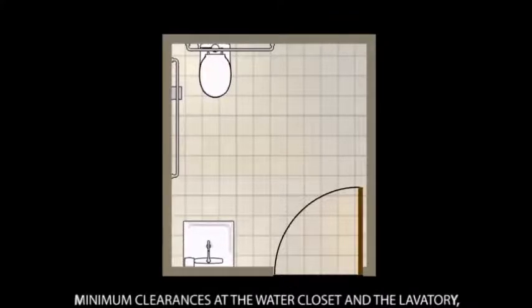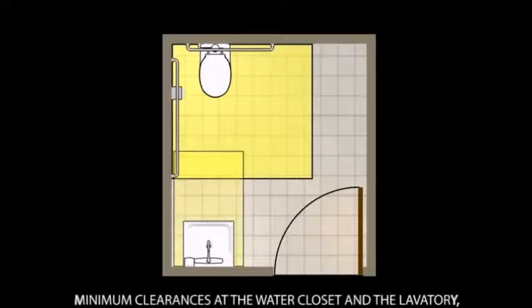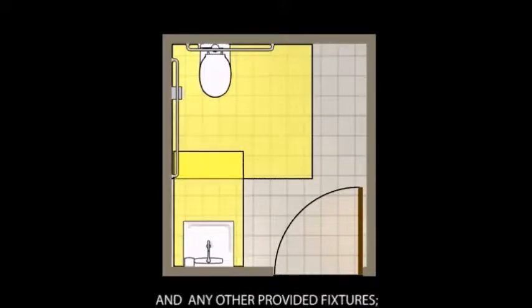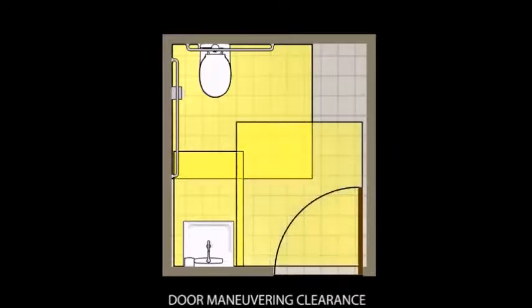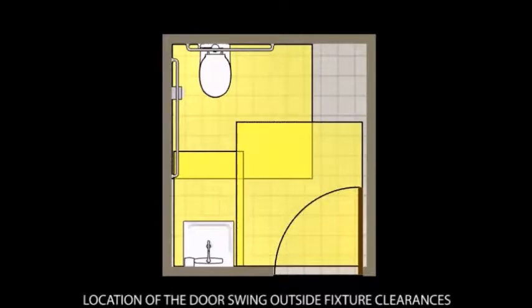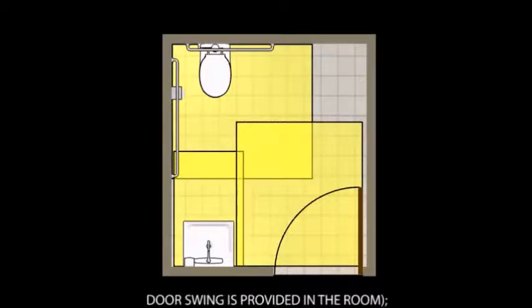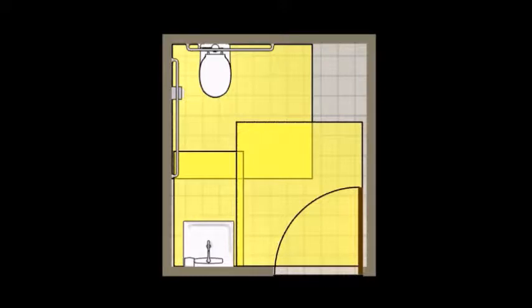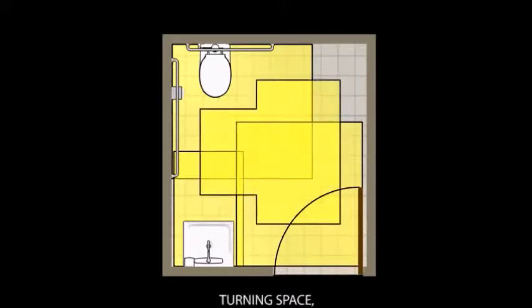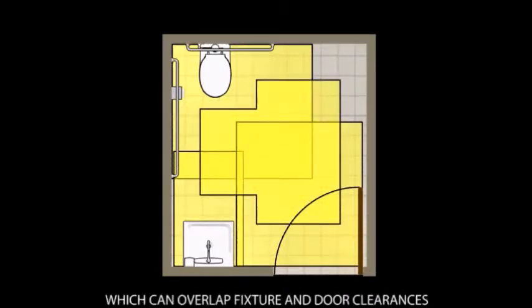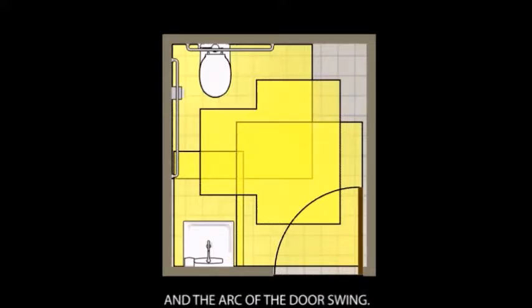Including minimum clearances at the water closet and the lavatory and any other provided fixtures, door maneuvering clearance unobstructed by any fixtures, location of the door swing outside fixture clearances unless wheelchair space beyond the door swing is provided in the room, and turning space which can overlap fixture and door clearances and the arc of the door swing.